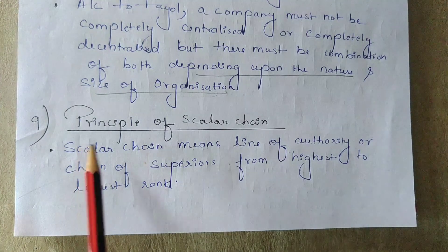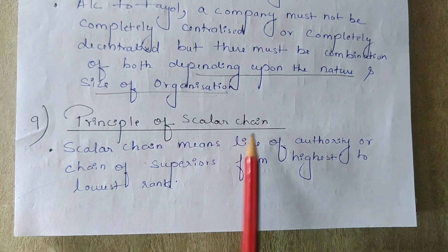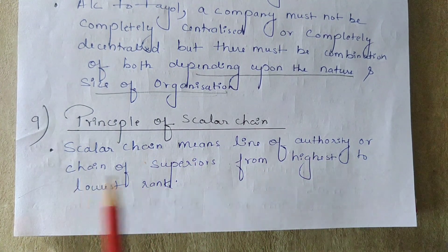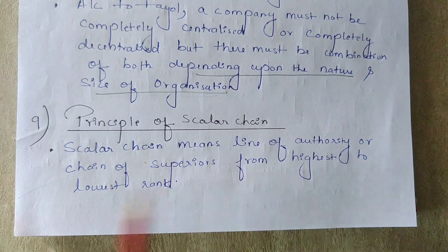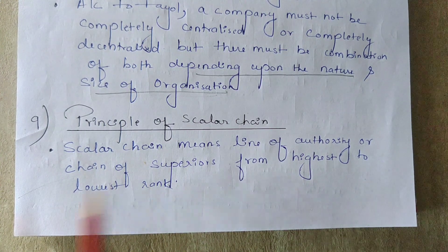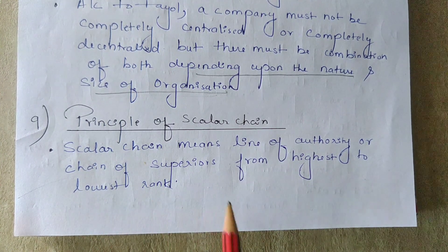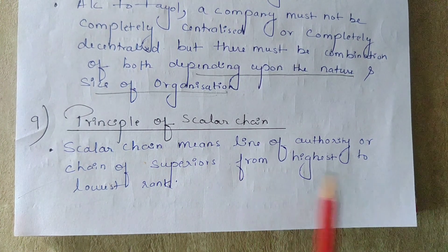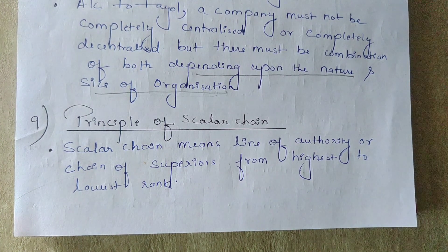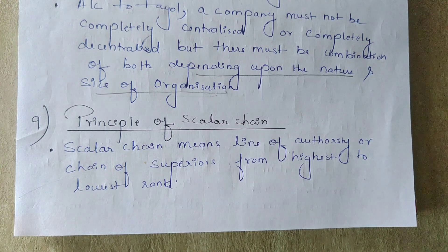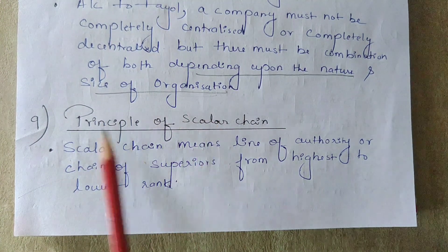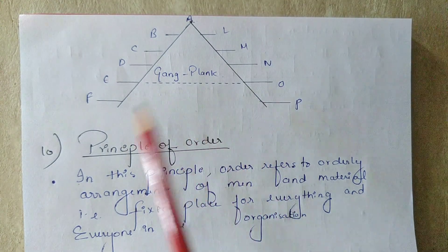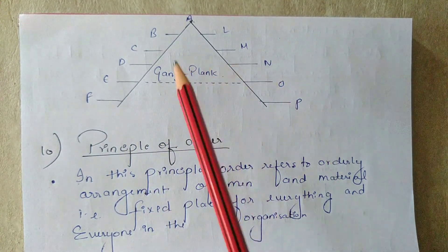The next principle is the principle of scalar chain. Scalar chain means the line of authority or chain of superiors from highest to lowest rank. It is a systematic way of communication from top level to lower level or from lower level to top level. According to Fayol, this chain must be followed strictly in the organization.